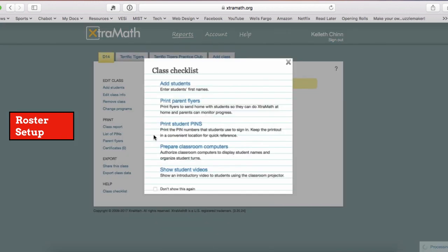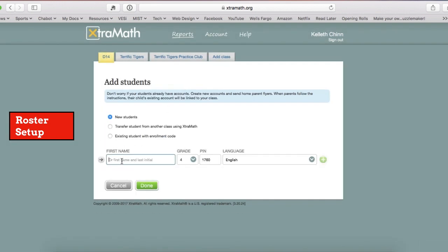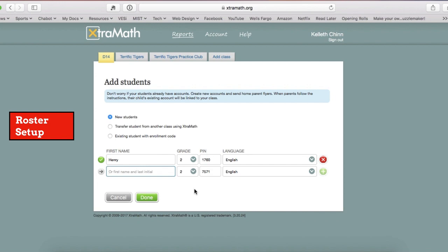After that, you'll just enter each student's name one by one, and Xtra Math will start automatically generating four-digit pins. Once you're finished entering your roster, you can print a list of student pins for your reference.